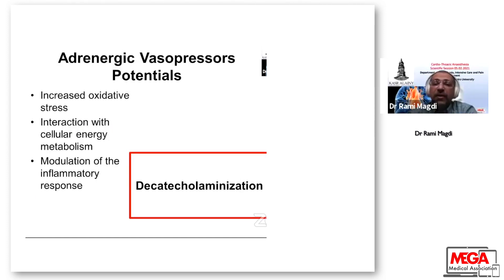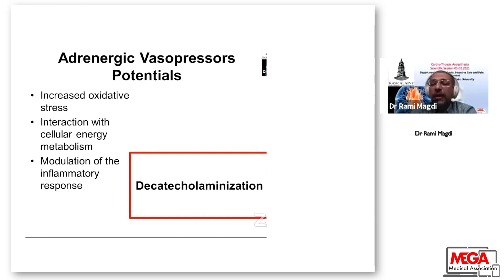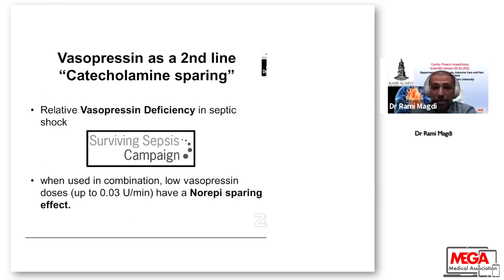However, adrenergic vasopressors carry potential downsides: increased oxidative stress, interaction with cellular energy metabolism, and modulation of the inflammatory response. A term that has emerged is 'decatecholaminization.' Therefore, vasopressin is the second line of treatment in order to provide catecholamine sparing.